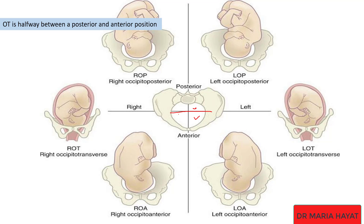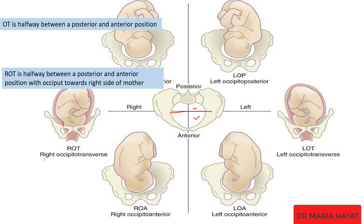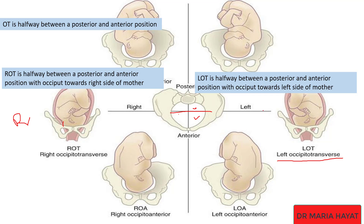If the occiput is halfway between the posterior and anterior, it is called occiput transverse. In right occiput transverse, the occiput is halfway between the posterior and anterior with the occiput towards the right side of the mother. In left occiput transverse, the occiput is halfway between the posterior and anterior with the occiput towards the left side of the maternal pelvis.